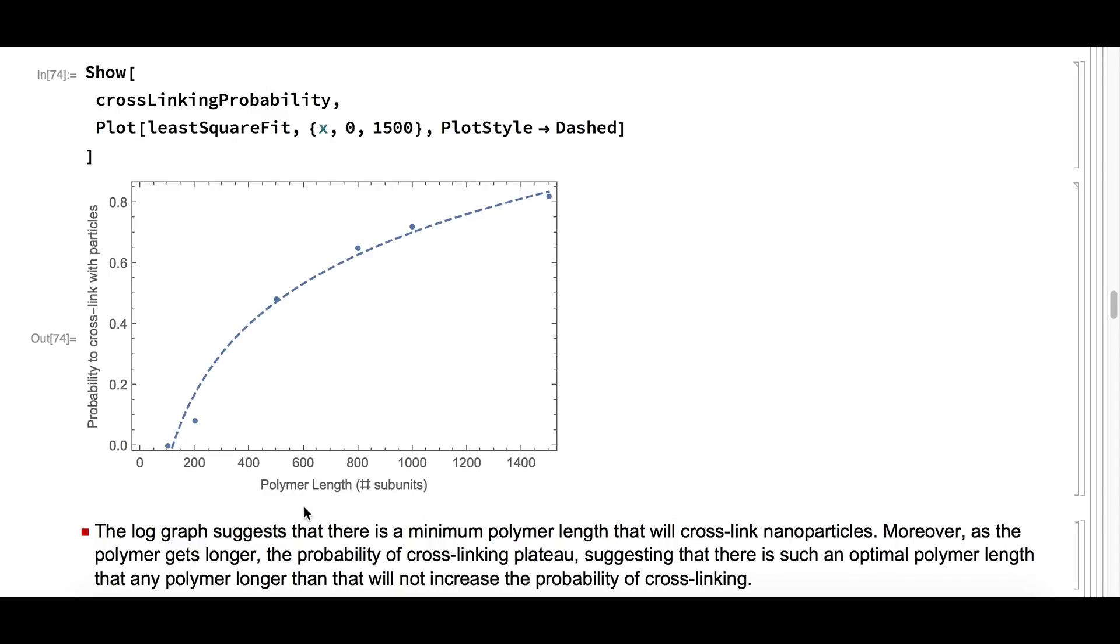What this fit tells us: first, there's a minimum number of subunits for cross-linking to occur. In our case, the minimum polymer length will have to be between 100 and 200 subunits to provide some type of cross-linking between polymer and nanoparticles. Second, the graph plateaus at a certain polymer length. Any polymers longer than this will not increase the probability of cross-linking.